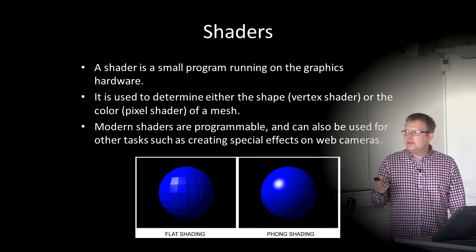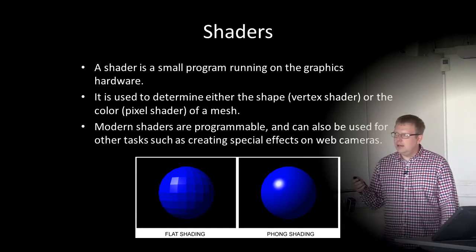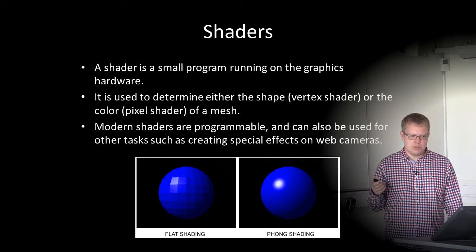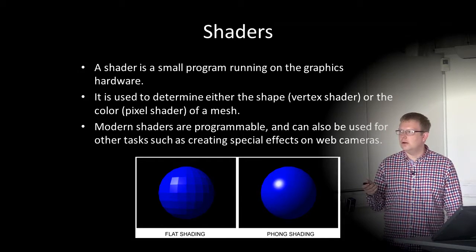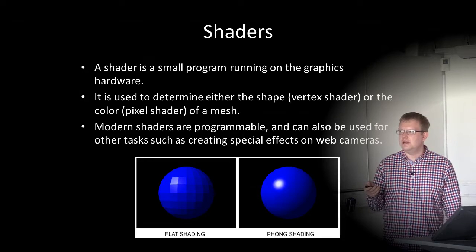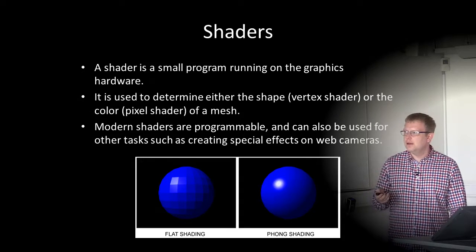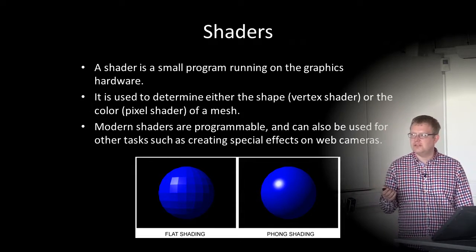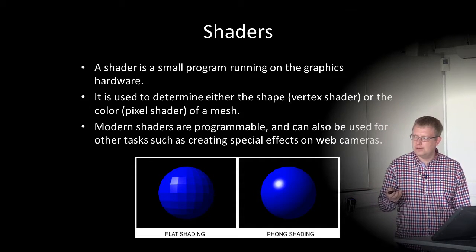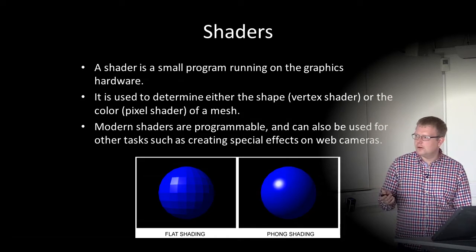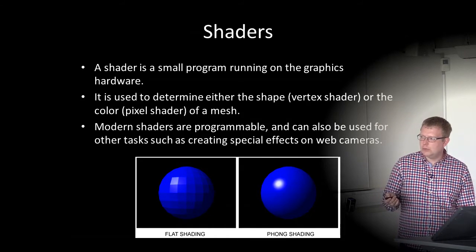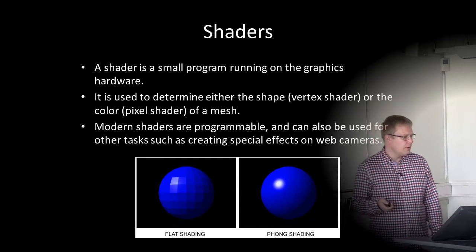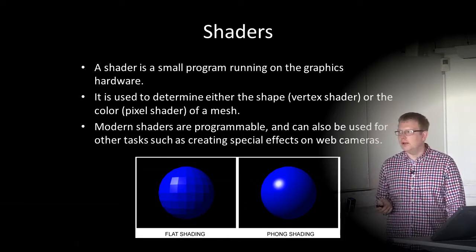To do the texture mapping we use a shader — a small program running on the graphics hardware, on the highly parallelized 3D graphics card. It's used to determine either the shape in a vertex shader or the color in a pixel shader of a mesh. We have two types: vertex shaders working on vertices and pixel shaders working on single pixels. Modern shaders are programmable. Here we have two different shaders on a blue sphere: flat shading and Phong shading, giving different results on how the sphere is rendered.